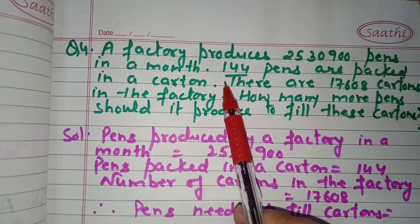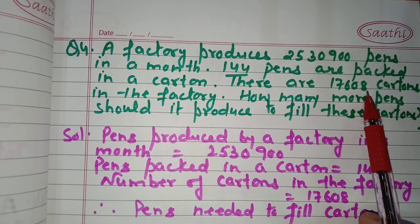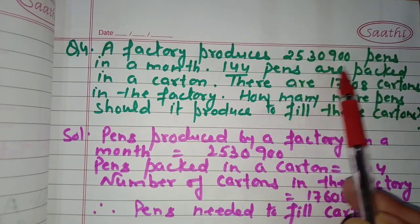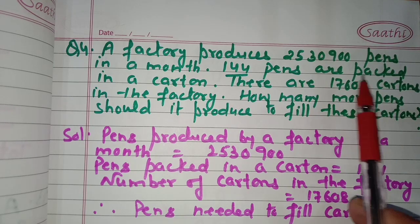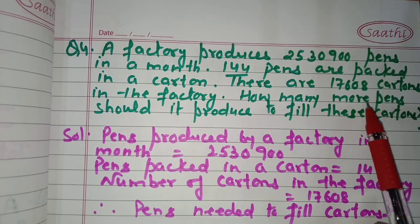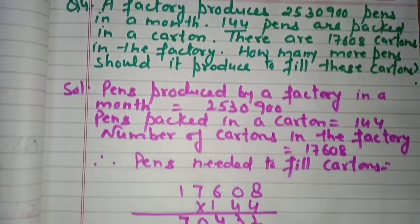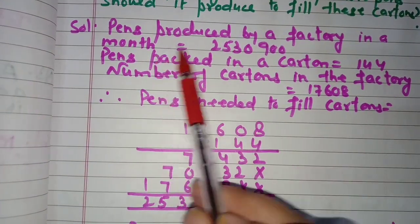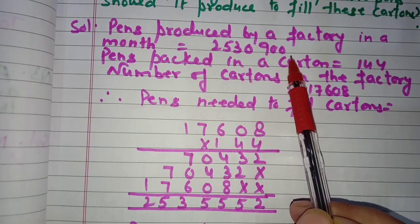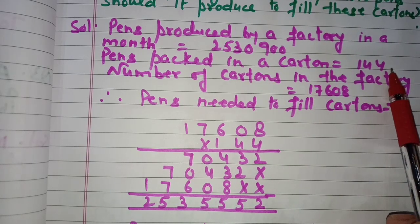Since pens in one carton is known, we can find how many pens are needed for 17,608 cartons. If the factory's current pens are not enough, we find how many more pens should be produced. Pens produced in a month: 25,30,900. Pens in one carton: 144. Number of cartons: 17,608.